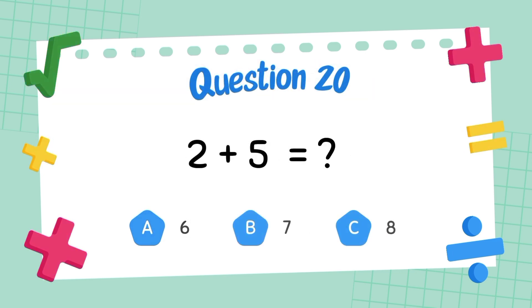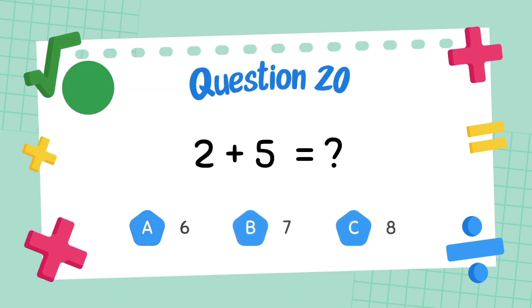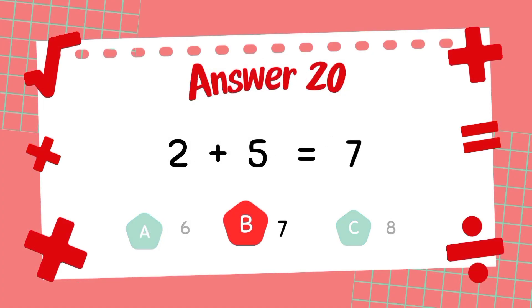What is two plus five? The answer is seven.